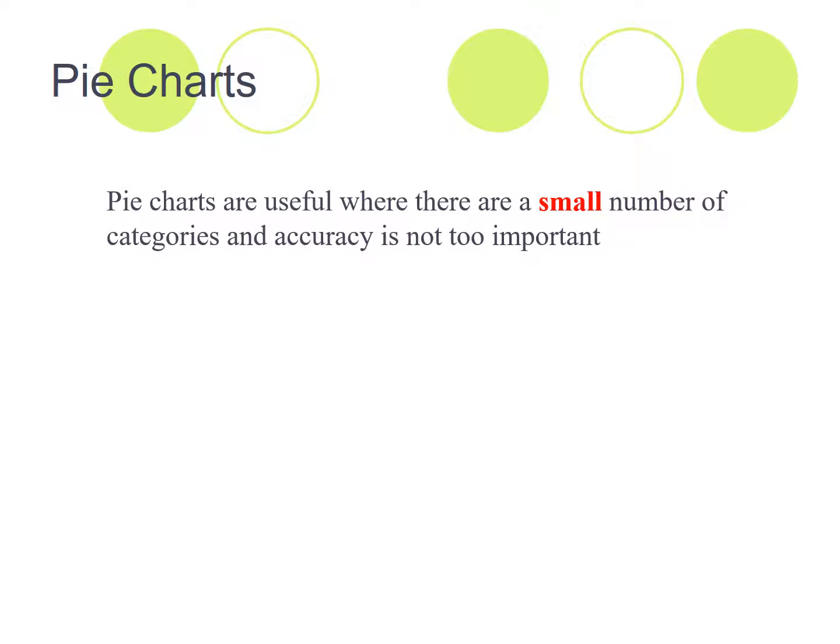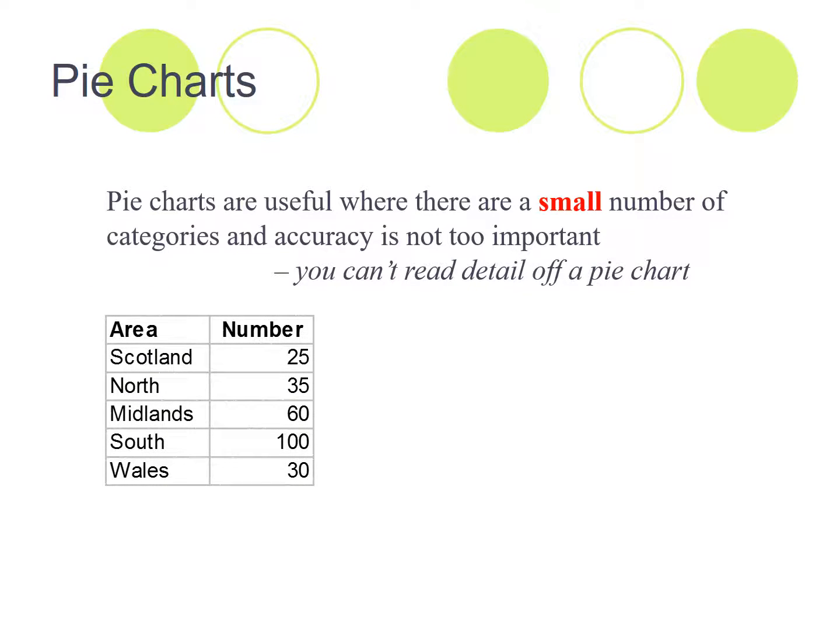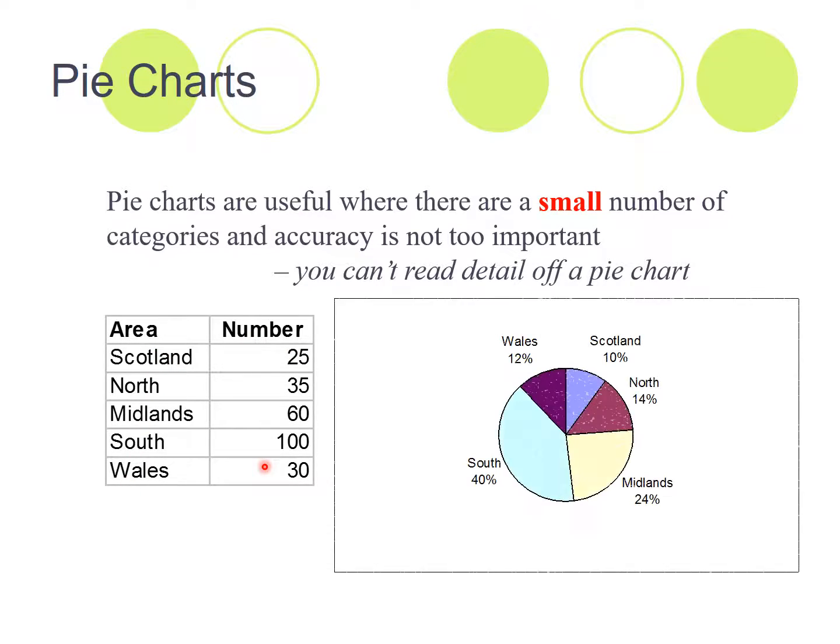Pie charts are useful when there's a small number of categories and also accuracy is not too important. It's harder to read the detail of a pie chart. So for example, there's a small number of categories here and we've got the information over here and here is a pie chart of the results. Now it's very quick to see that the South is the largest. You can tell that Midlands is possibly a little bit less. It might be harder if we didn't have the percentages listed here to know that Wales and North weren't the same size. It's harder to read the detail unless it's printed out for you.